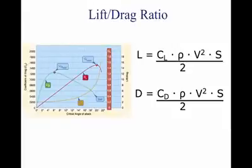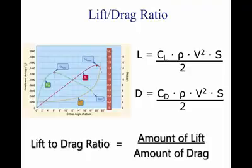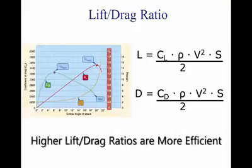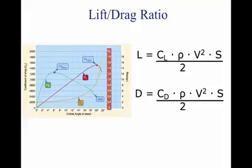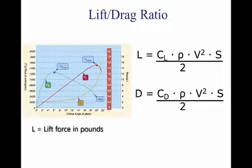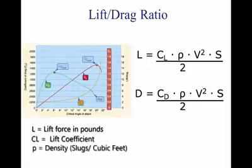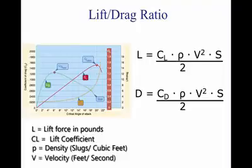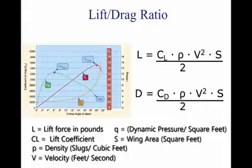Drag is the price paid to obtain lift. The lift-to-drag ratio is the amount of lift generated by a wing or airfoil compared to its drag, and also governs the airfoil's efficiency. Aircraft with higher lift-drag ratios are more efficient than those with lower lift-drag ratios. The lift-drag ratio is determined by dividing the lift component by the drag component, or by dividing the lift equation by the drag equation. L is the lift force in pounds; Cl is the lift coefficient; P is density expressed in slugs per cubic feet; V is velocity in feet per second; Q is dynamic pressure per square feet; and S is the wing area in square feet.